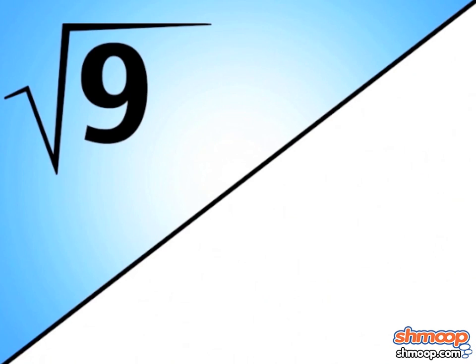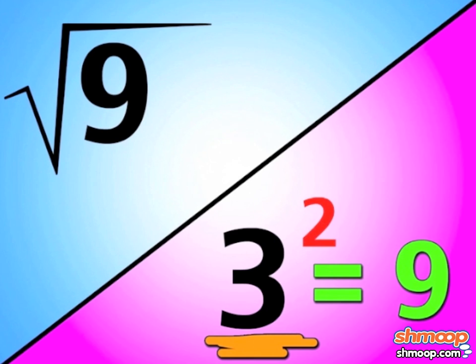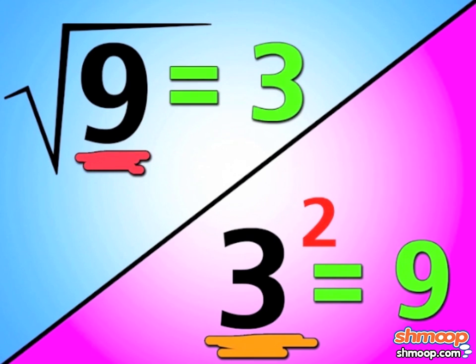A root is really just the opposite of an exponent. Three squared equals nine, and the square root of nine equals three.